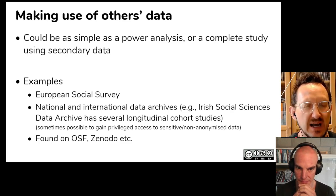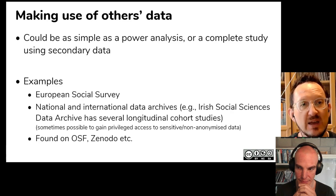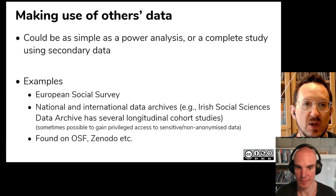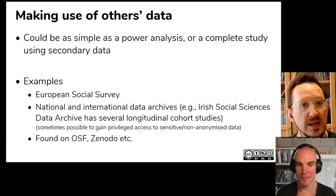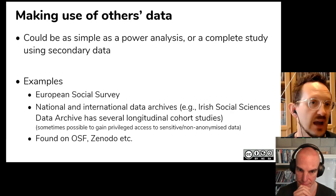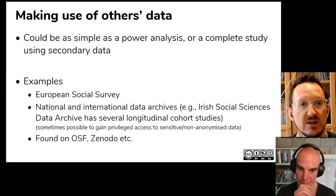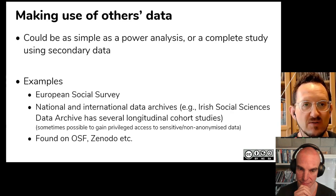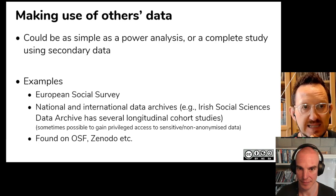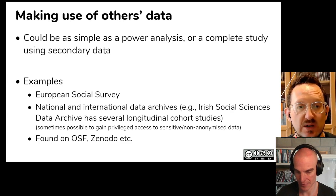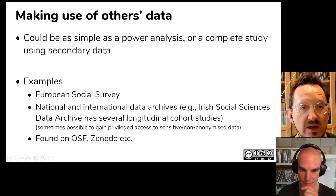For questions that can only be answered with more sensitive data, you're actually able to apply for a deeper level of access where you can get information that might include more sensitive variables — like whether people have mental health problems or have experienced bullying. There are different layers for going through that, with really good processes in place. It's also possible to find data sets on things like the Open Science Framework, Zenodo, or other institutional repositories, and sometimes in journals.